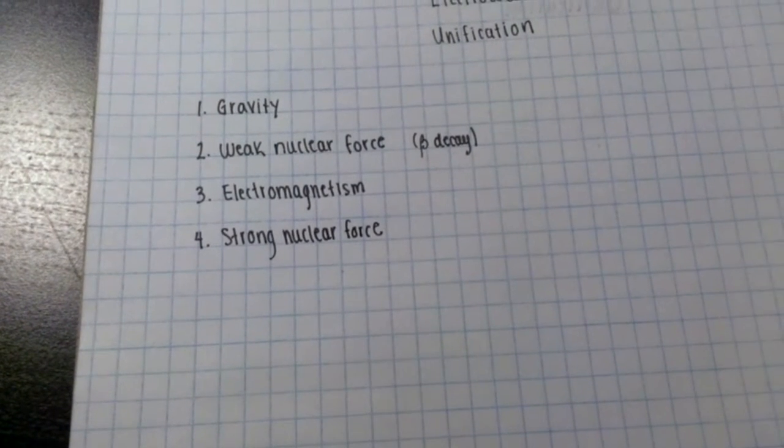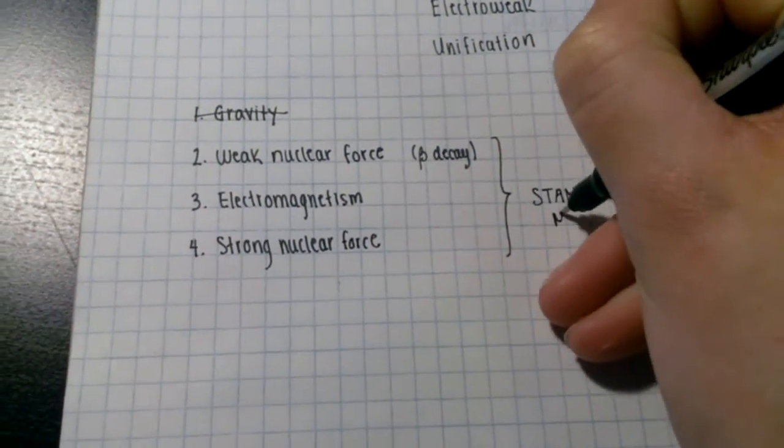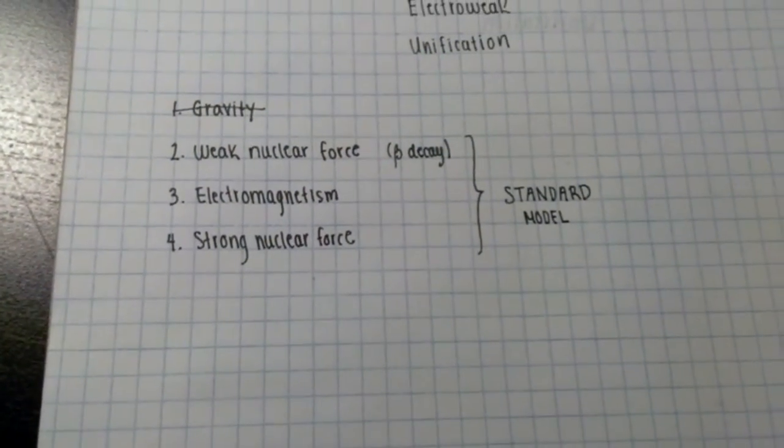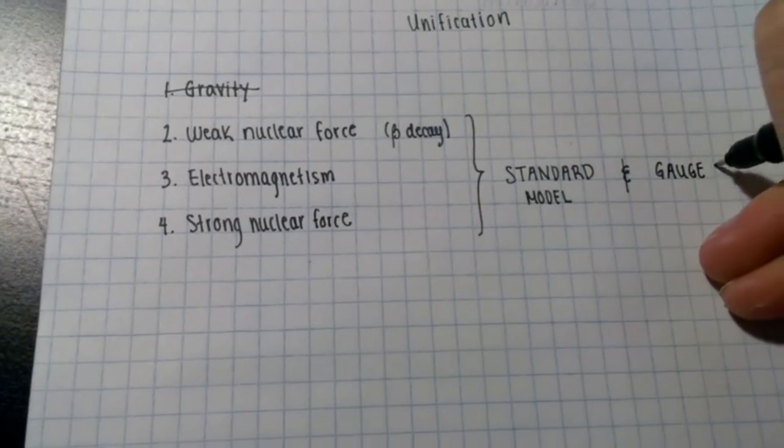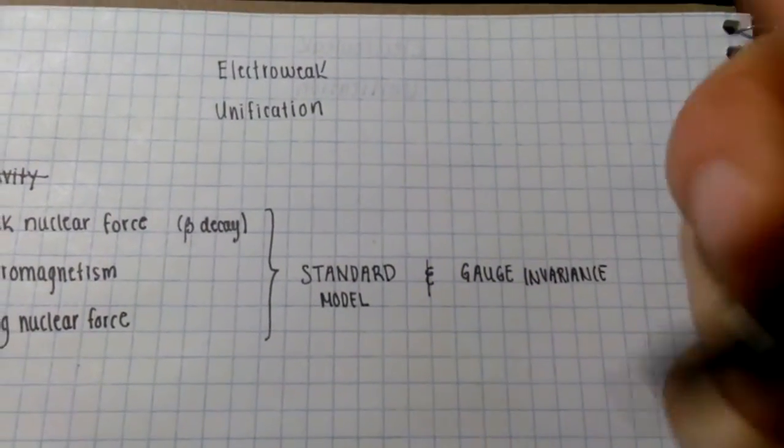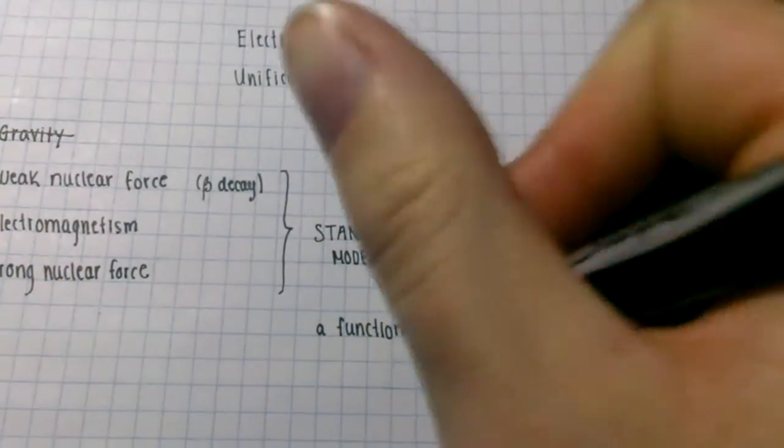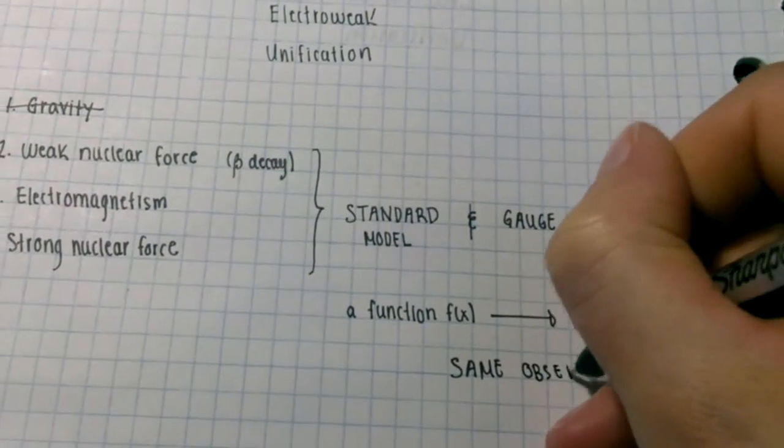The standard model is a theory that explains all known particles and all known forces except gravity. The standard model is what we call a gauge invariant theory. Gauge invariance means that you can take a function and change some of its parameters without modifying the observable characteristics of the function.